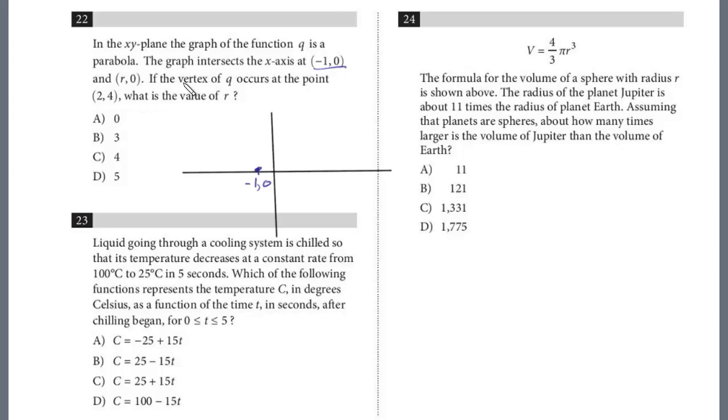But they do tell us the vertex of q is at 2, 4. This helps us. So 2, 4 is the other point. So now we know that it's a downward opening parabola.